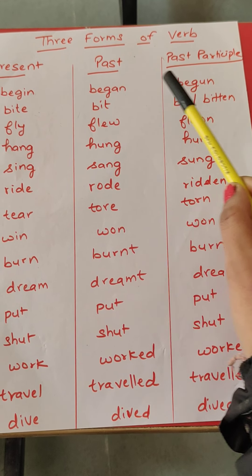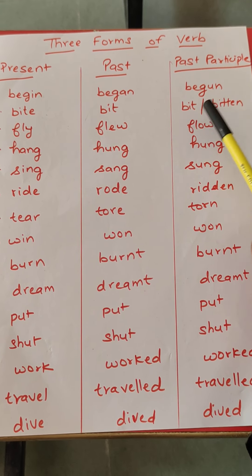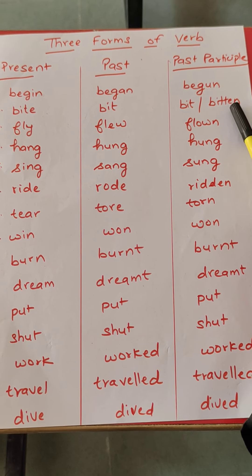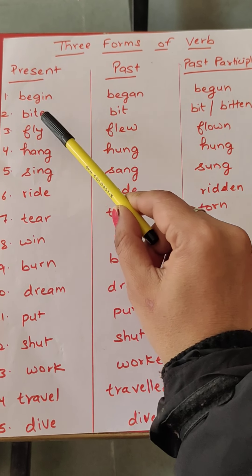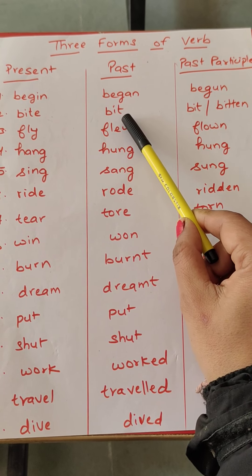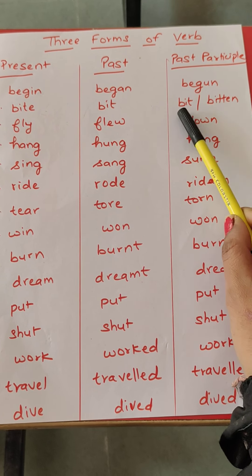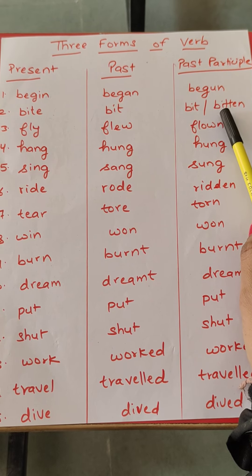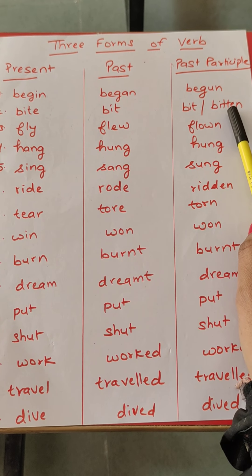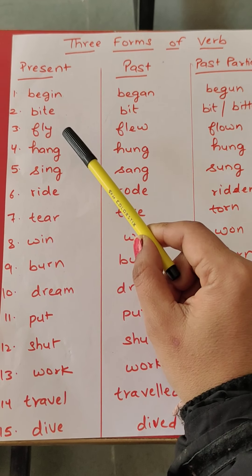Bite, bit, bit ya bitten. Yeh doonoh is ki third form hoti hai — doonoh mein se koi bhi ek aap likh sakte hain, toh that will be correct.